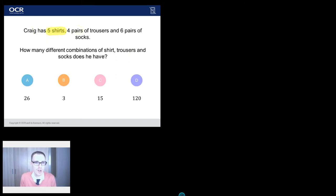Craig has five shirts, four pairs of trousers and six pairs of socks, lucky man. How many different combinations of shirts, trousers and socks does he have?